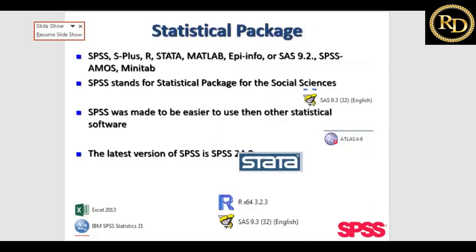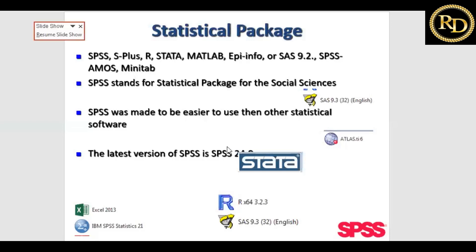Now let's look at the statistical packages available. There are many software options: Stata, R, SPSS, Epi Info, and many others. SPSS, Excel, and R are very commonly used. There are also qualitative software options like Atlas.ti. These software packages are used for analysis purposes — use whichever you feel comfortable with.